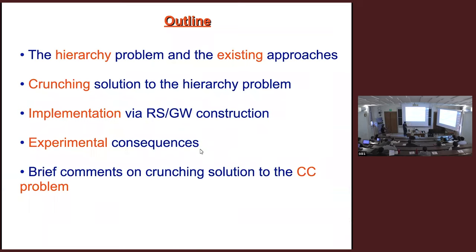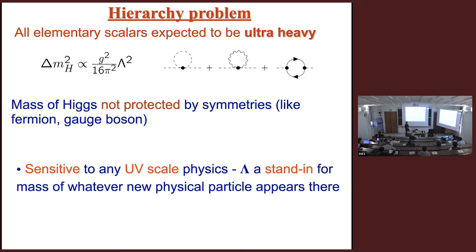Here's a little outline. I'll tell you a bit at the beginning about the hierarchy problem and the types of approaches we know about — Savas made my job very easy with his talk on Wednesday. Then I'll come to our main proposal: a different type of solution to the Higgs hierarchy problem. I'll show you a concrete implementation in terms of a 5D warped extra-dimensional setup, which has experimental consequences. If time permits, I'll also mention a related idea about a crunching solution to the cosmological constant problem.